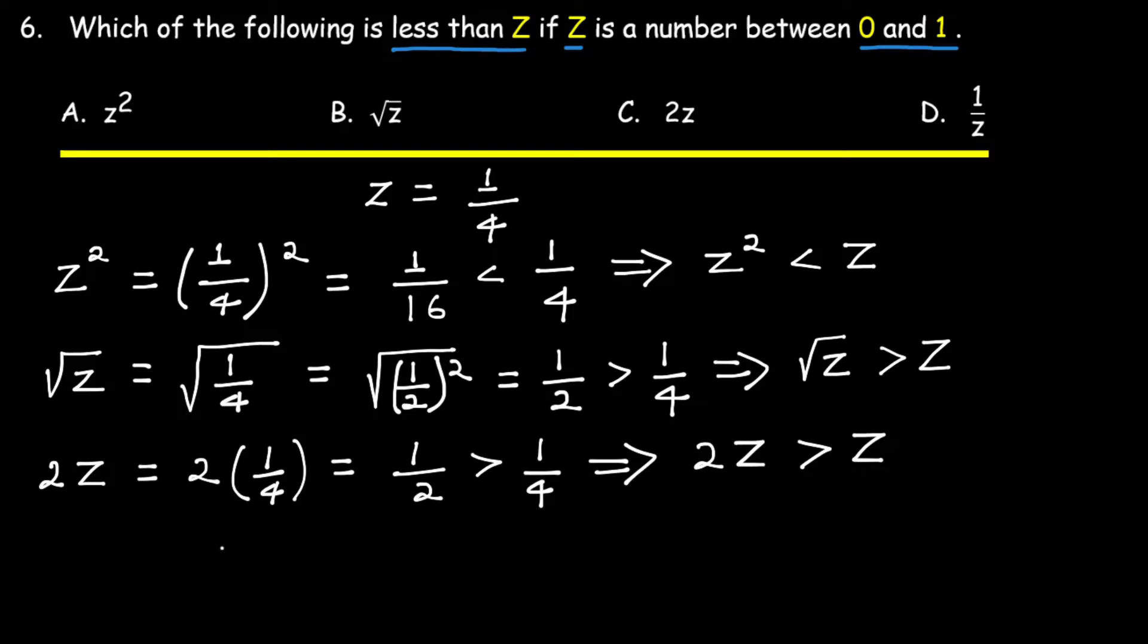Now for 1 over z. 1 over z is 1 over 1/4, which is equal to 4. And 4 is greater than 1/4. This implies that 1 over z is greater than z.